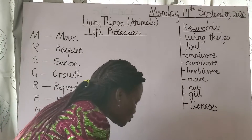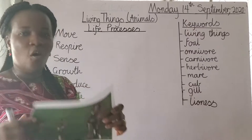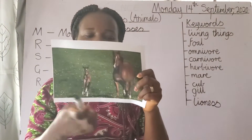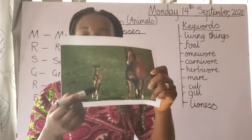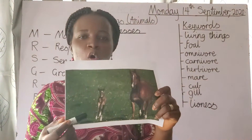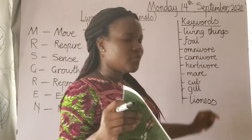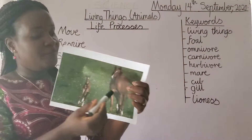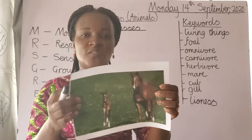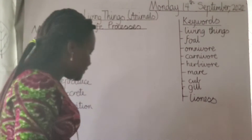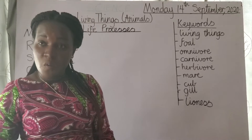Animals also grow. This is the horse — the female horse is called a mare, and the baby horse is called a foal. So animals also grow; when they give birth to their young, the young ones also grow.